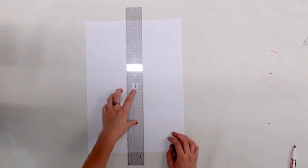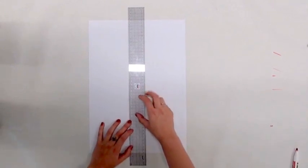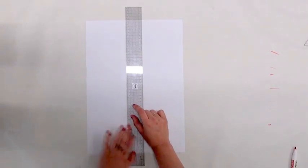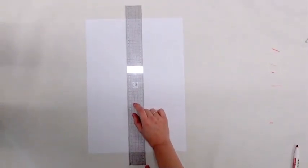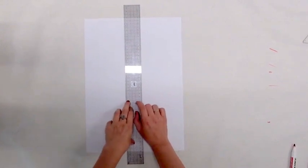The other ruler that we're going to use in your pattern making classes is called the grading ruler. Essentially, like its name suggests, it's actually designed to do manual grading.